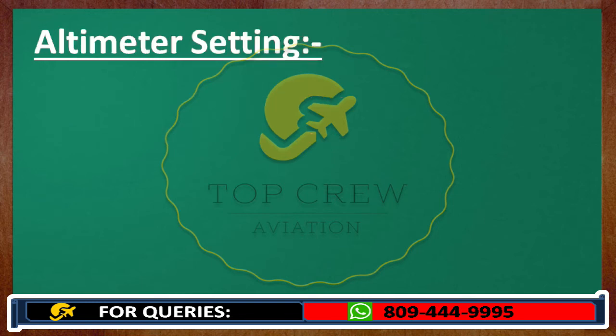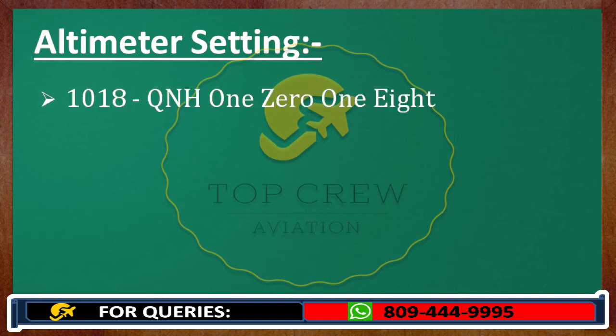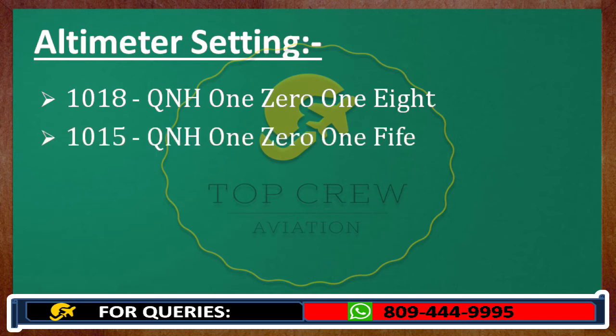Altimeter setting. First example: if it appears like this, we would transmit it as QNH 1018. If it is written 1015, we would transmit it as QNH 1015.